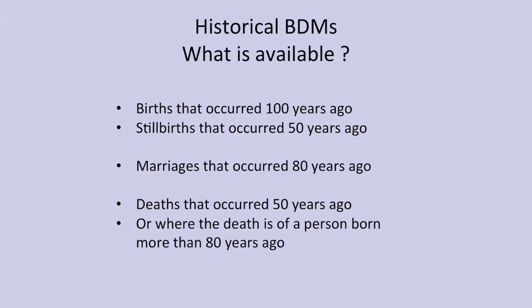On historical BDMs, what is available? Births that occurred 100 years ago, stillbirths that occurred 50 years ago, marriages that occurred 80 years ago, deaths that occurred 50 years ago, or where the death is of a person born more than 80 years ago — then you will find that death index.